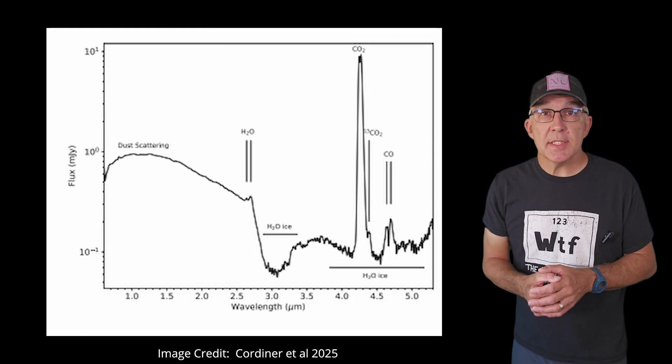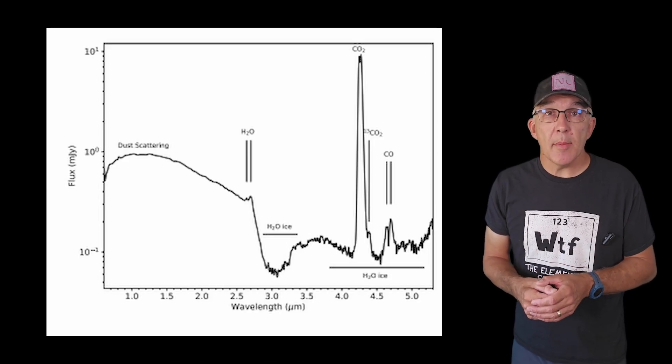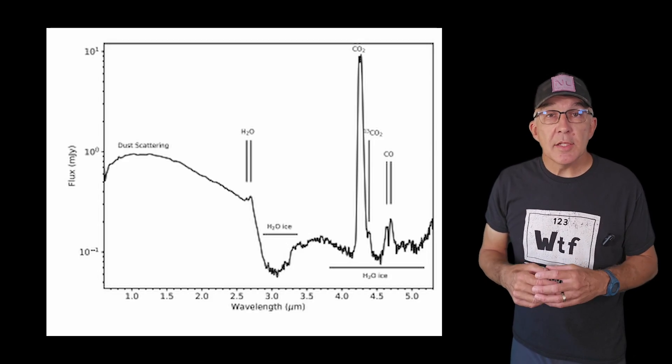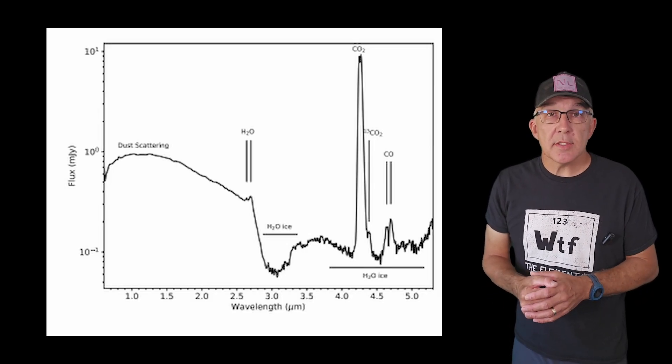Spectroscopy with JWST that you can see on screen confirms the SPHEREX results showing a carbon dioxide dominated coma that's outgassing more towards the sun, which makes sense as that's the hotter side of the comet.